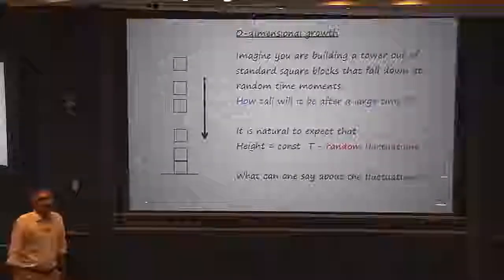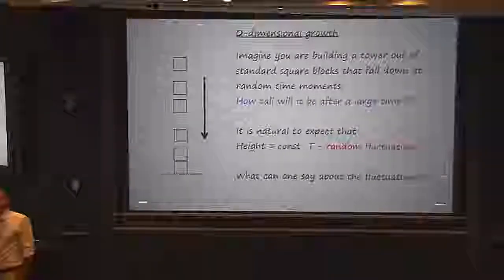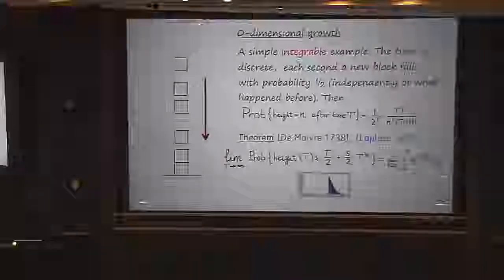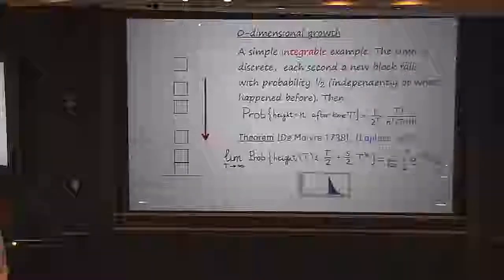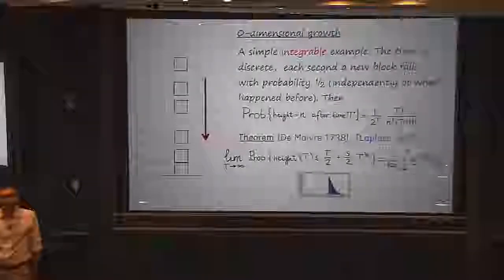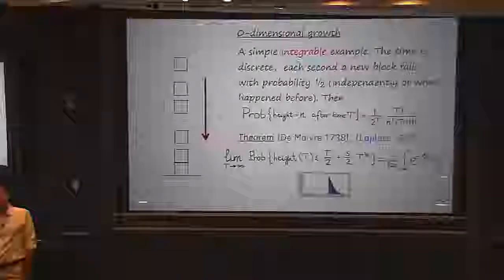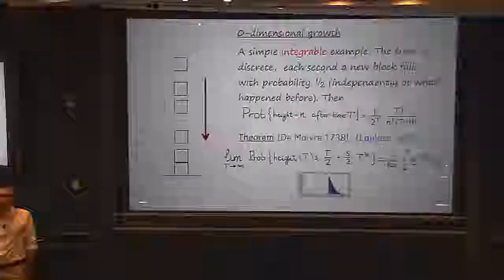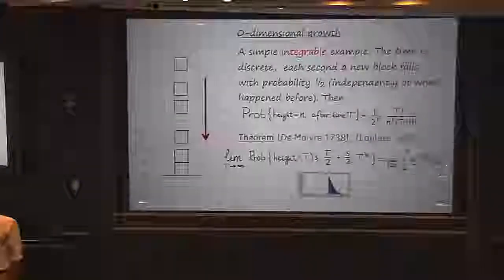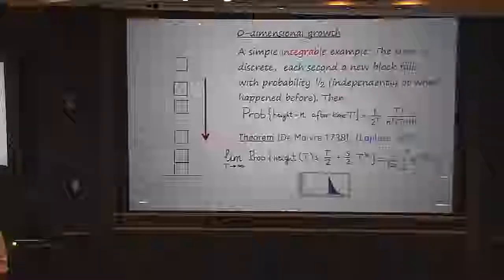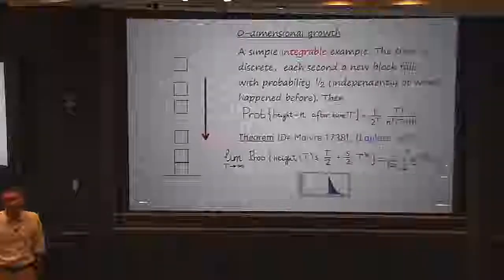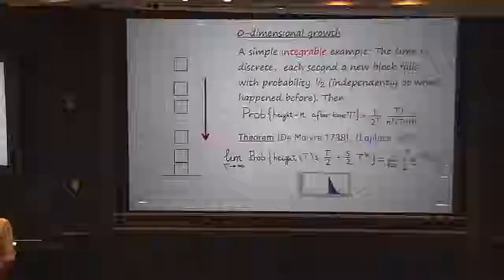What are you going to do? The thing that many people will try doing is come up with an example. So let's provide the information that wasn't given to us. Let's assume that we are building this tower of blocks in discrete time. Every 30 seconds, we either put a block on top or we don't — that happens with probability one-half. We flip a coin and it either goes on top or it doesn't.